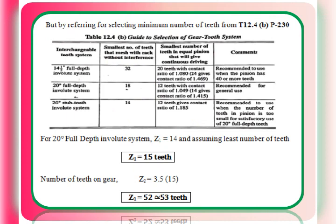We have z₁ = 13 teeth, but this is not final because we need to refer to a table with the standard set of number of teeth — the least number of teeth to consider, from table 12.4, page 230, which gives a guide to select the gear tooth system. For 20 degree stub tooth involute system, the least number of teeth is given as 14. In our earlier calculation we got 13, so that cannot be recommended. We are supposed to go with z₁ = 14, and assuming the least number of teeth plus 1, z₁ = 15 teeth.